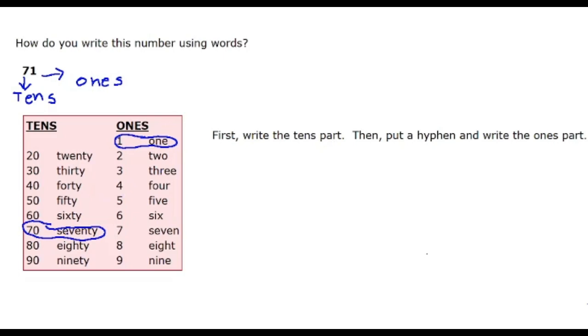So this is the tens part. So let's write that. Then it says you put a hyphen, so you put a hyphen. And then you write the ones part. So here's the ones part here. We circled it. And that's how you write 71.